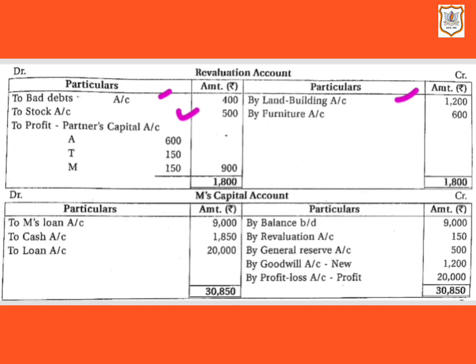The next point: goodwill is valued at rupees 7,200. According to the old profit and loss sharing ratio of 4:1:1, the profit share of deceased partner M is 1/6. This share of goodwill will be given by the continuing partners in their gaining ratio.